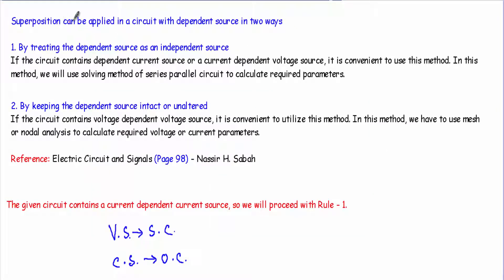When a circuit contains a dependent source and I have to apply the superposition theorem to calculate voltage or current parameters, we can proceed in two ways. The first is by treating the dependent source as an independent source — keeping the independent sources active while replacing the dependent source with either an open circuit or short circuit, depending on whether it is a voltage or current source, and keeping the dependent source active separately. This method is convenient when the circuit contains a dependent current source or a current dependent voltage source.